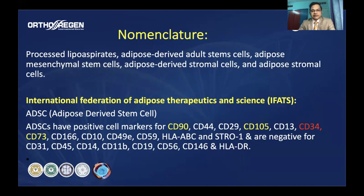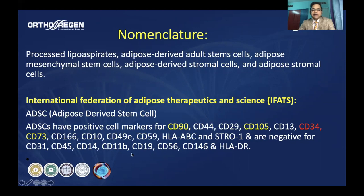Because of so many different terminologies in use, the International Federation of Adipose Therapeutics and Science looked into this matter and proposed that these cells should be called adipose-derived stem cells (ADSCs). Only cells should be called ADSC if they have positive markers for CD90, CD105, and CD73, along with CD44, CD13, and CD34, and negative for CD31, CD45, CD56, and HLA-DR.